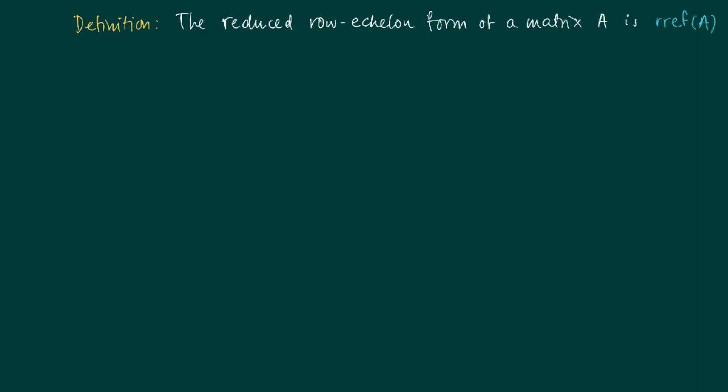We have that this reduced row echelon form is unique, and this means as well that the number of pivots of such a matrix is fixed, and so we may speak of the number of pivots.